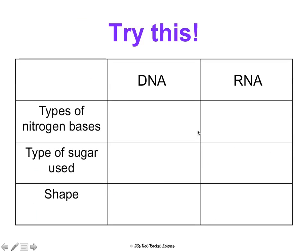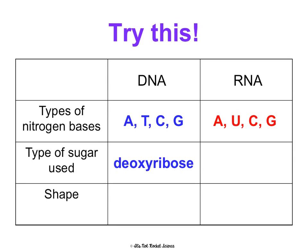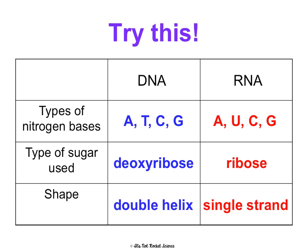Try to fill this in based on what you just learned. DNA is made of A, T, C, and G. RNA is made of A, U, C, and G. The sugar in DNA is deoxyribose, and the sugar in RNA is ribose. The shape of DNA is a double helix, and the shape of RNA is a single strand.